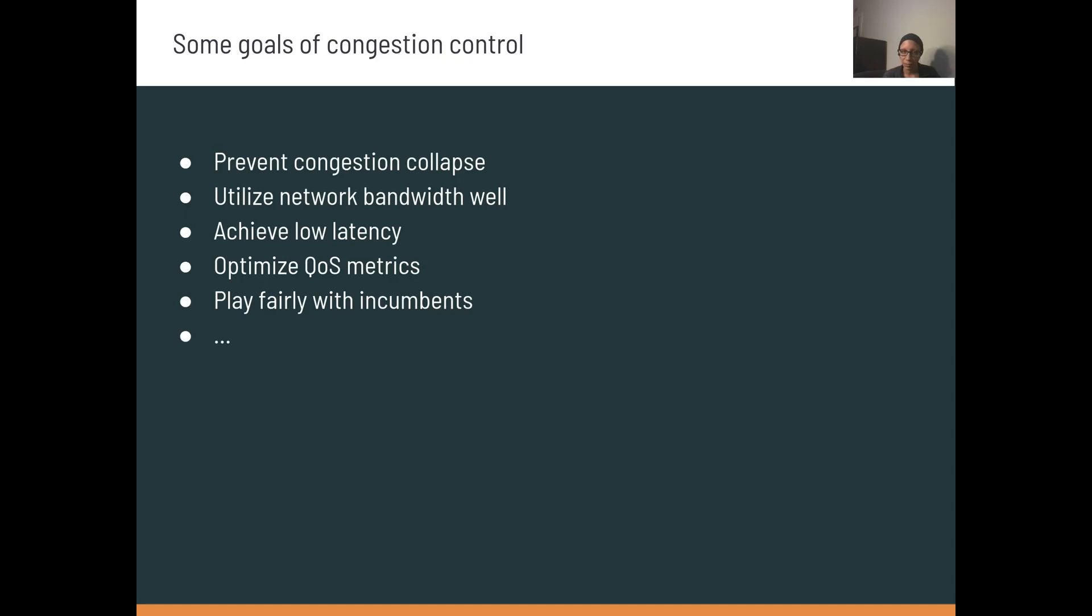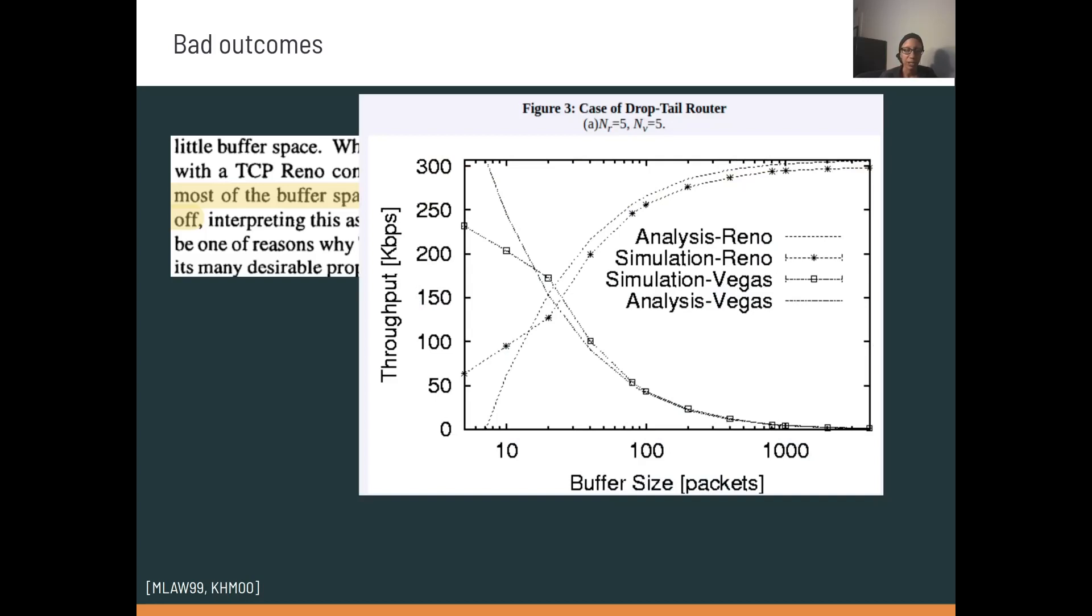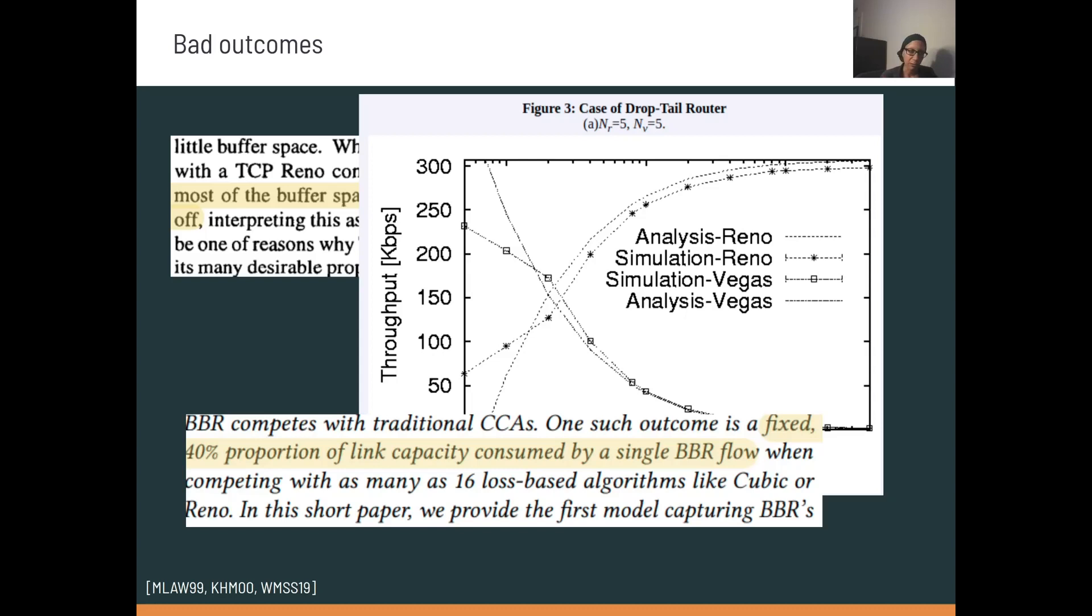Unfortunately, when protocols that have different objectives use the same network, this could lead to some suboptimal outcomes. For example, when TCP New Reno uses the same link as TCP Vegas, there's a well-known outcome that TCP Vegas can actually be pushed to getting zero throughput. And this is a graph that also shows that phenomenon in simulation. And recent work has shown that when TCP BBR, which is a much more modern protocol, competes with TCP Cubic, even though these are both nominally buffer-filling protocols, BBR consistently takes up a large share of the link bandwidth compared to each Cubic flow.